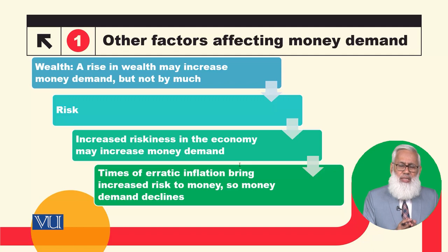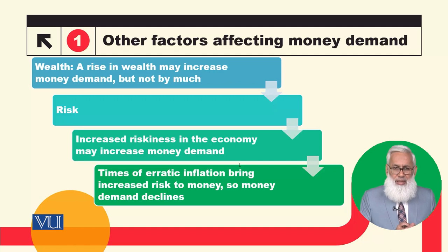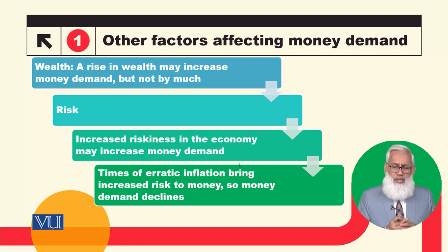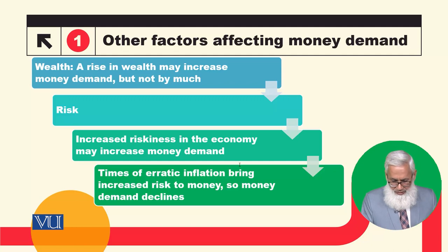जब inflation बहुत unpredictable हो जाए, तो money को hold करना भी risky हो जाएगा और money demand कम हो जाएगी। लेकिन अगर alternative assets — जैसे stocks — के risk में इजाफा हो जाता है, तो money relatively a safer asset बन जाएगी। People switch कर जाएंगे safer asset की तरफ, यानि money demand बढ़ जाएगी।